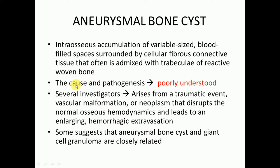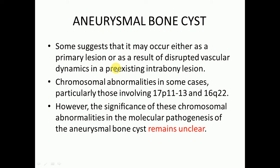If we talk about the cause and pathogenesis, it is poorly understood. Several investigators think that it arises from a traumatic event, vascular malformation, or neoplasm that disrupts the normal osseous hemodynamics and leads to an enlarging hemorrhagic extravasation. Some suggest that aneurysmal bone cyst and giant cell granulomas are closely related, and others suggest that it may occur either as a primary lesion or as a result of disrupted vascular dynamics in a pre-existing intraosseous lesion.